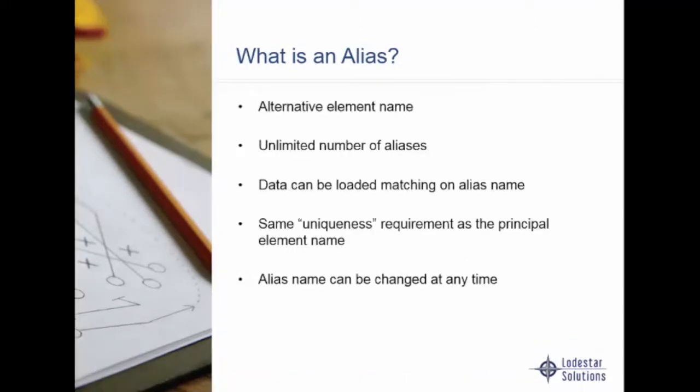An alias is another type of attribute that's very helpful in TM1. It allows you to have an alternate element name, you can have an unlimited number of aliases, data can be loaded matching on the alias name, an alias does require the same uniqueness as the principal element name, and an alias name can be changed at any time.